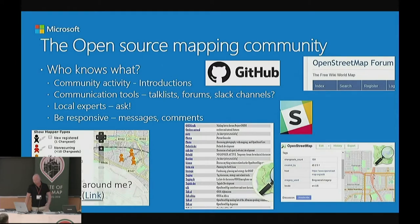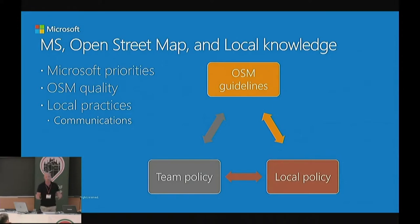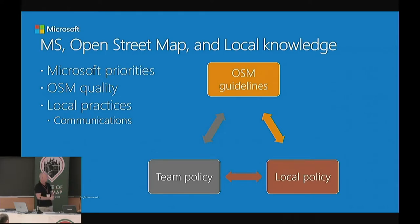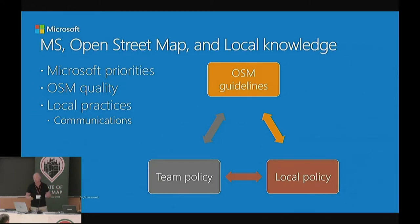With all of this in place, we started setting up the projects. There was a balance we had to strike with every project: what are the OSM guidelines, what are the local policies, how do they apply them, what are the subtle nuances in their way of mapping, and what is the structure we want to put in place — balancing that with what Microsoft has set us to do for their priority list. That was the approach to the design of each project.